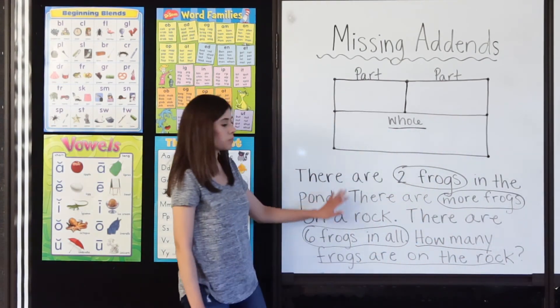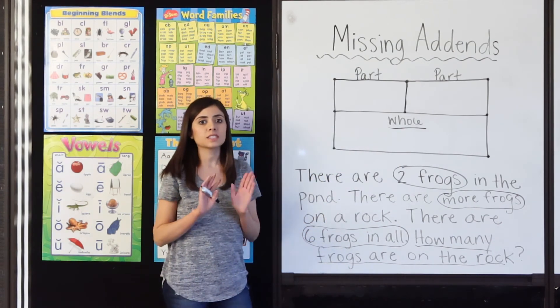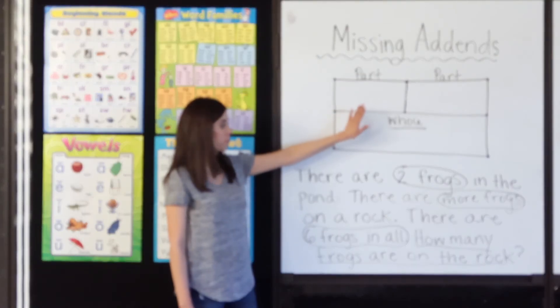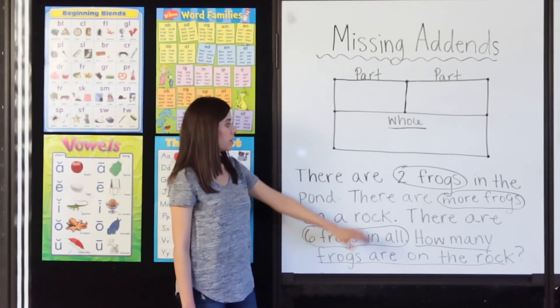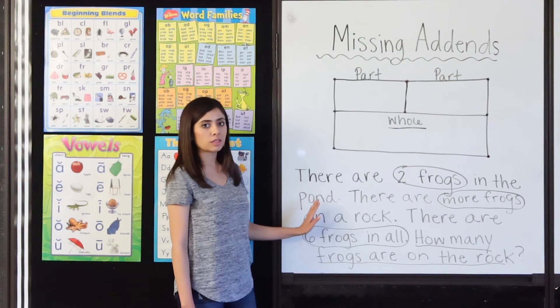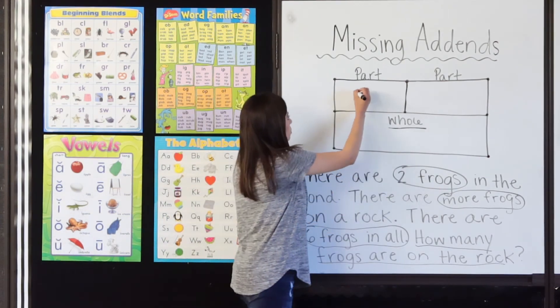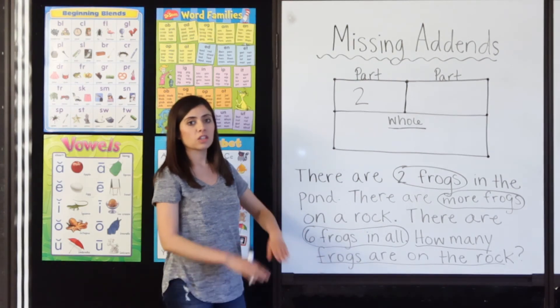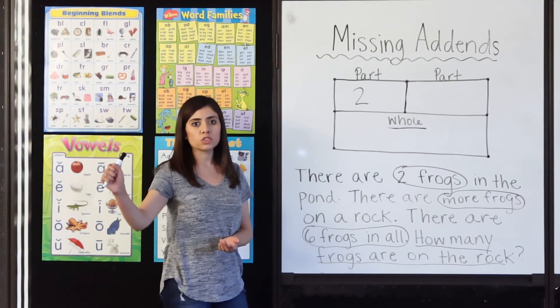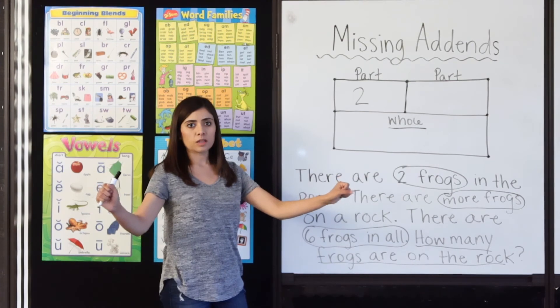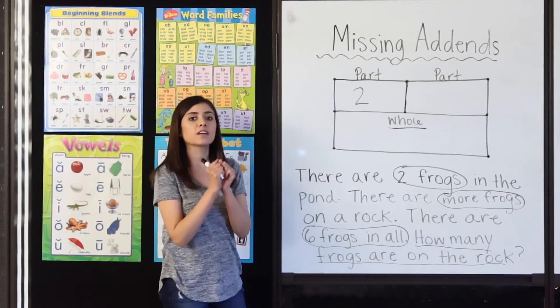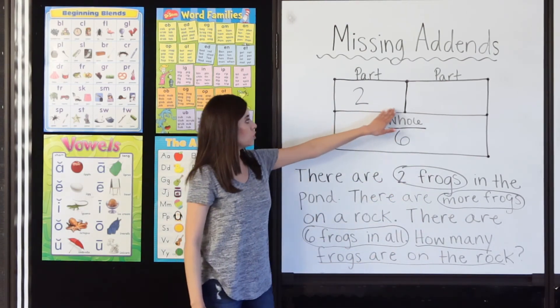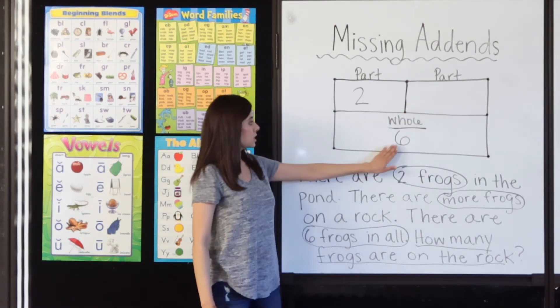Okay, so this is a pretty big question. Let's take it step by step and fill in what we know in our part-part-whole chart. I know that 2 frogs are in the pond, right? So, 2 frogs in the pond, and 6 frogs in all. So, I have 2 and some on the rock. But when I put them all together, I have 6. So, let's write 6 as our whole. 2 plus what equals 6?